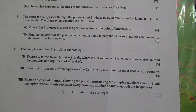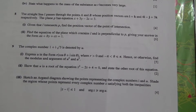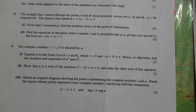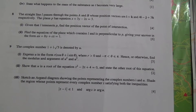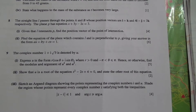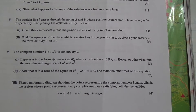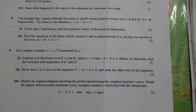Hi, question number 9 taken from June 2002 advanced level maths HSE P3. The complex number 1 plus i root 3 is denoted by u. Express u in the form r cos θ plus i sin θ, where r is greater than 0 and minus π less than θ less than or equal to π. Hence, or otherwise, find the modulus and the argument of u squared and u cubed.